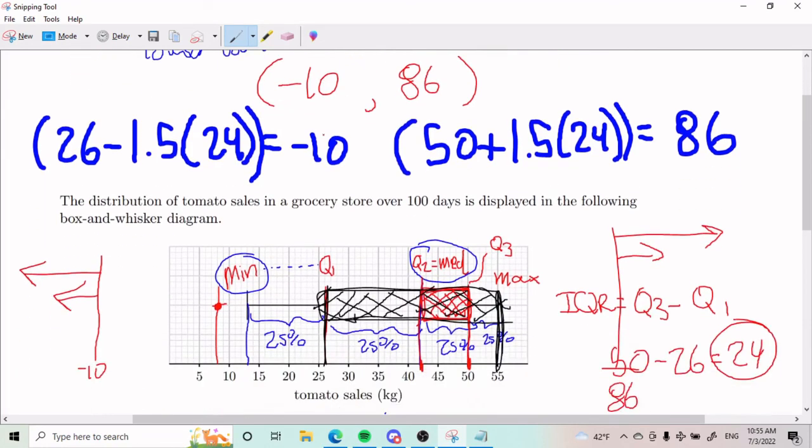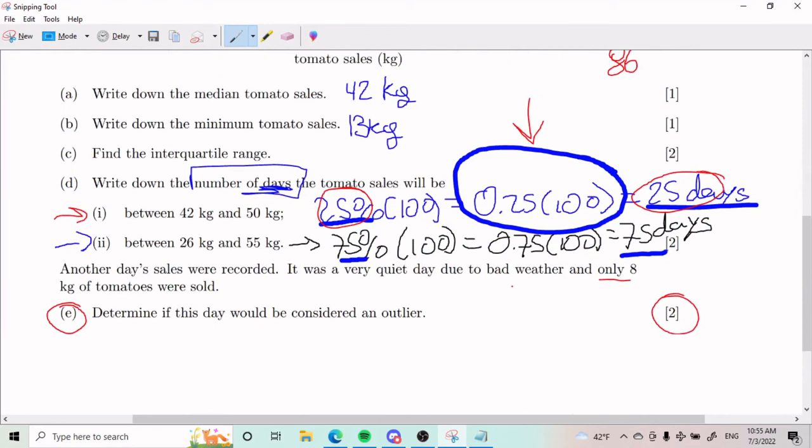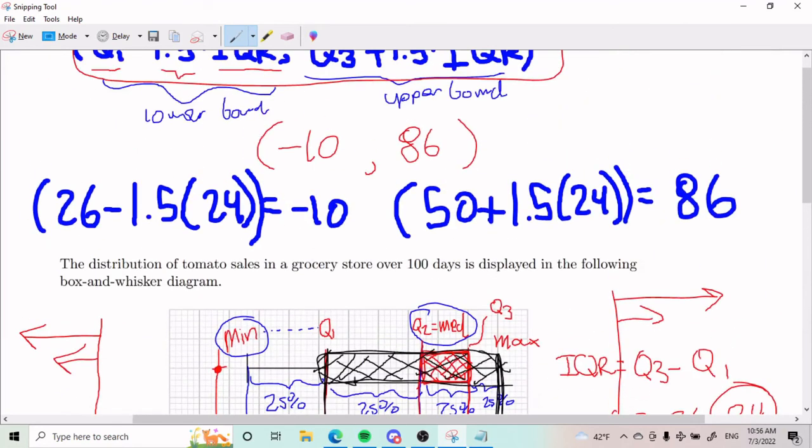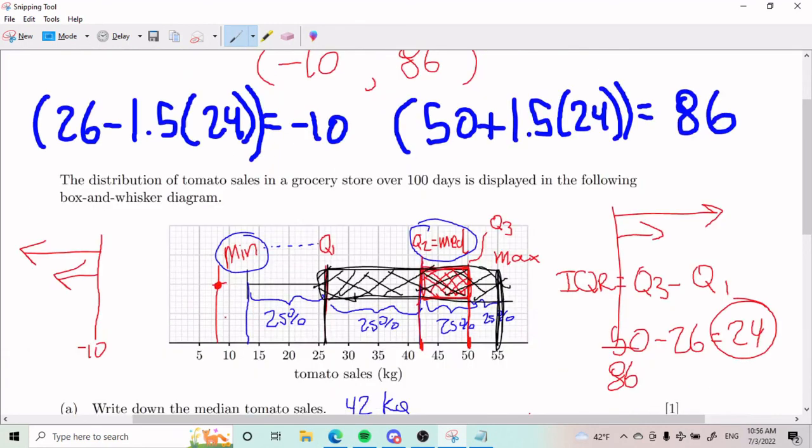And so where's our value? Our value was said to be at eight kilograms of tomatoes. Is eight kilograms of tomatoes within this interval? Yes, it's within. Because it's right here and it's to the right, not to the left of my negative 10. Beautiful.